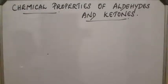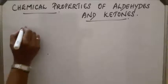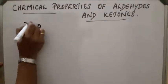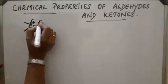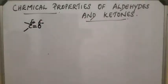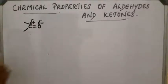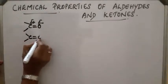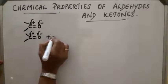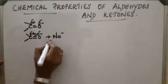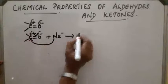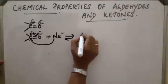Now, chemical properties of aldehydes and ketones. Both contain a carbonyl group, so most of the reactions are similar. The carbon has a slight positive charge and oxygen has a slight negative charge, so nucleophiles can attack on the carbon atom, forming an alkoxide compound.